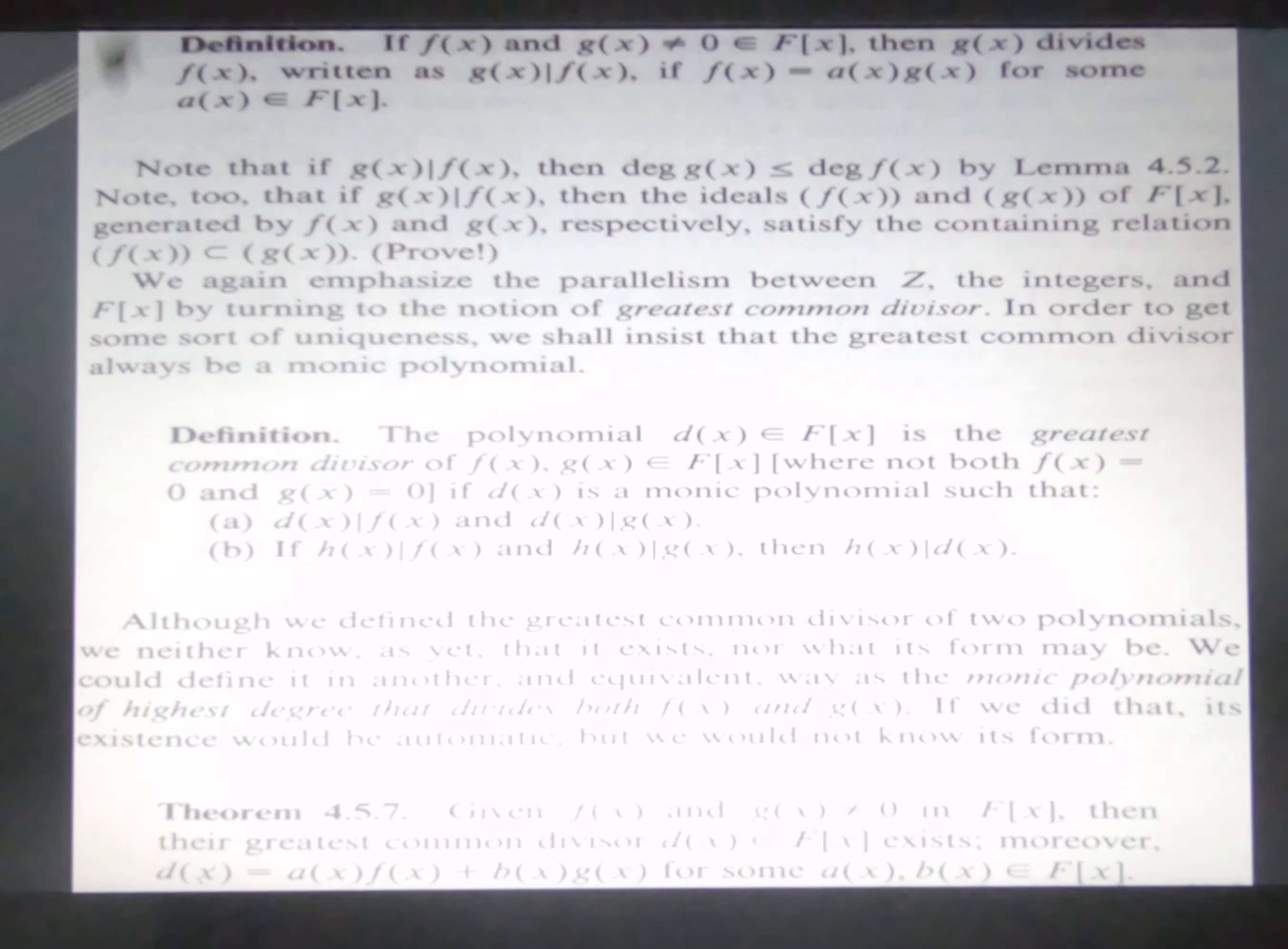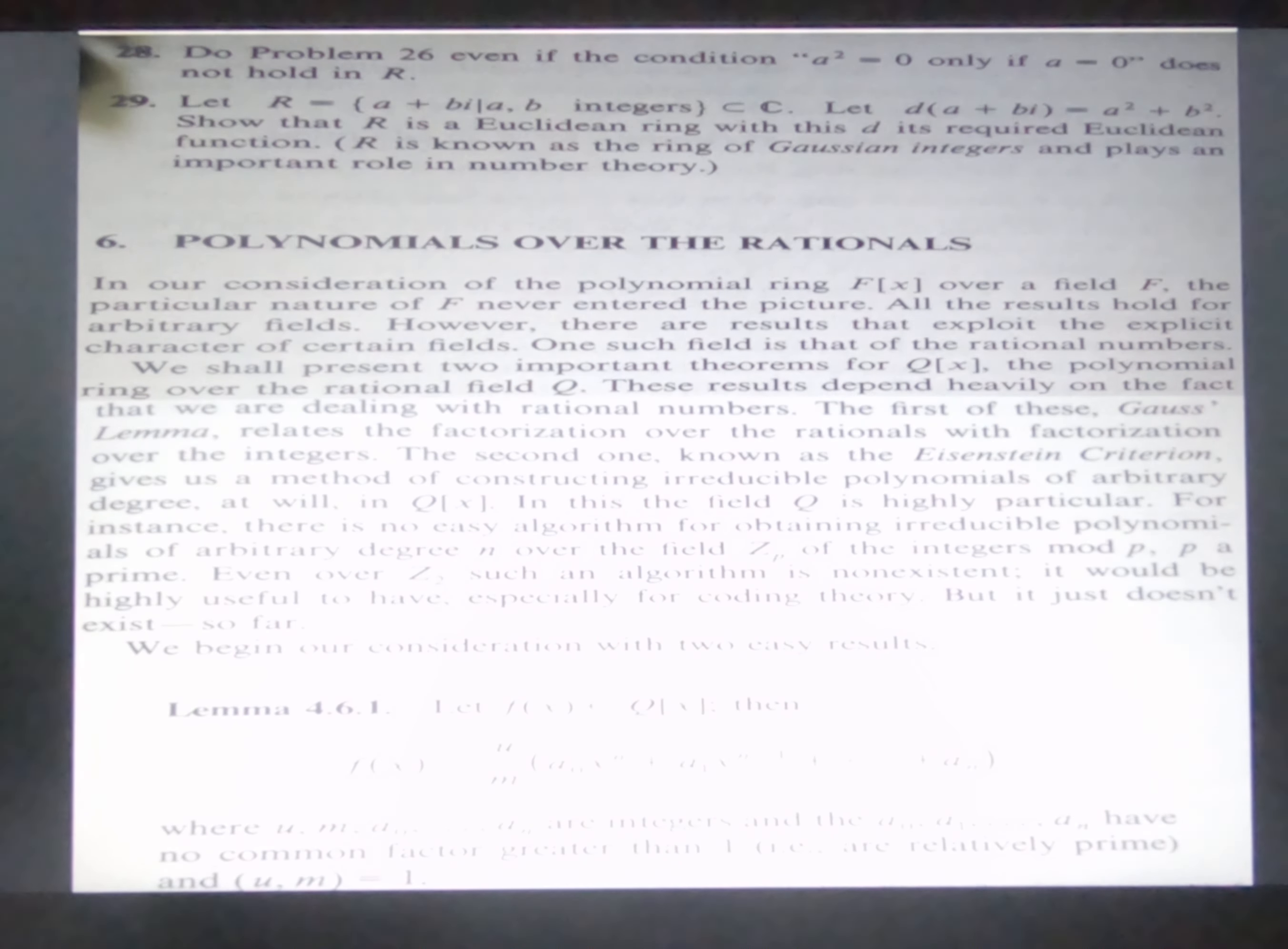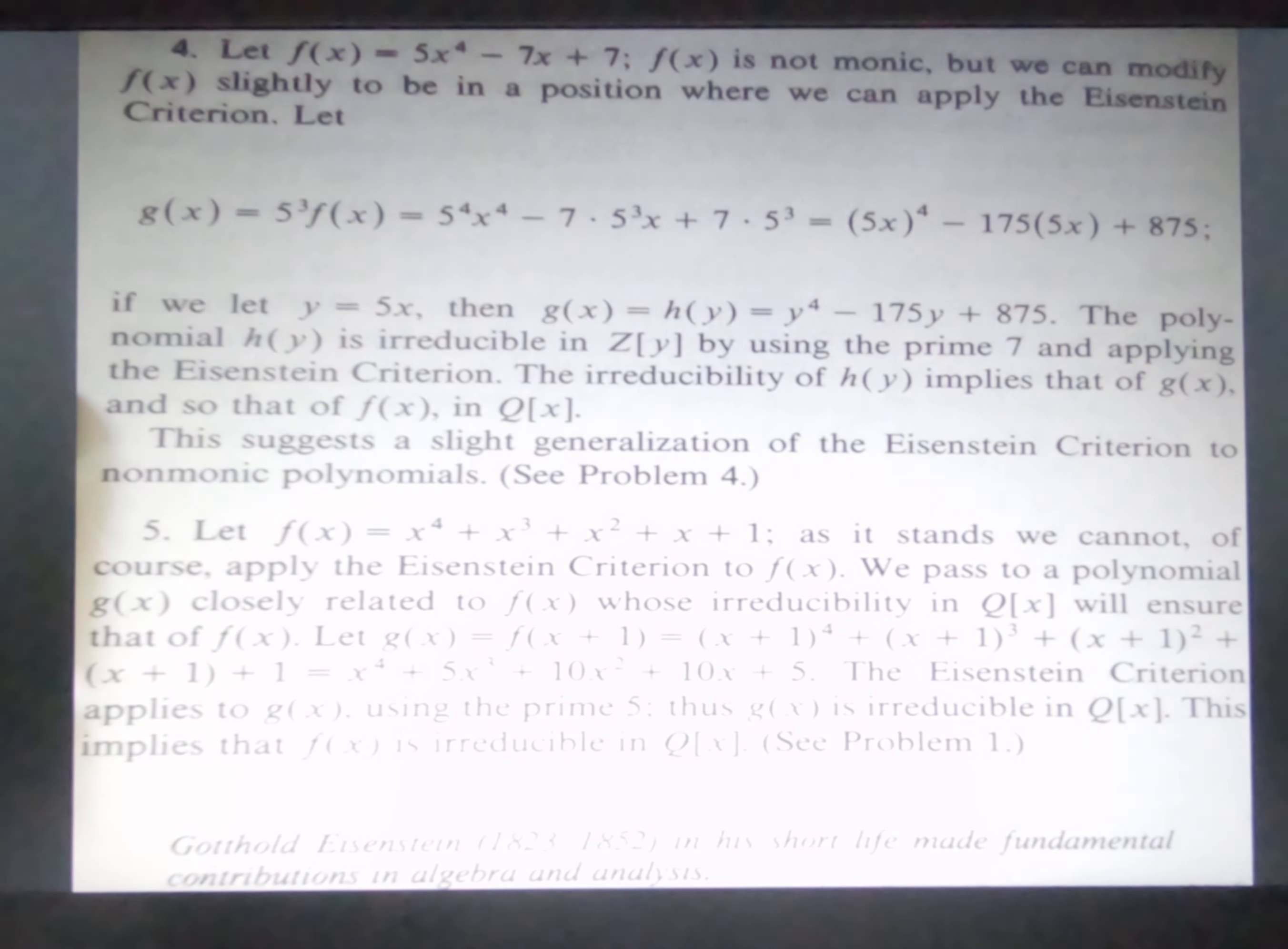More definition. More theorem. And definition. More theorem. Polynomial over the rational. More theorem. This is Gauss, some of his information. And these are Einstein's criterion. Information about Einstein.